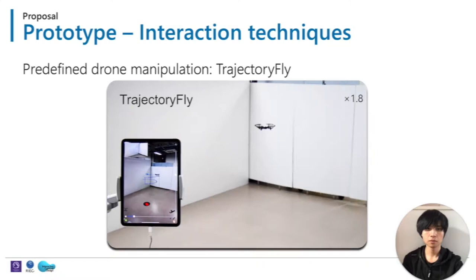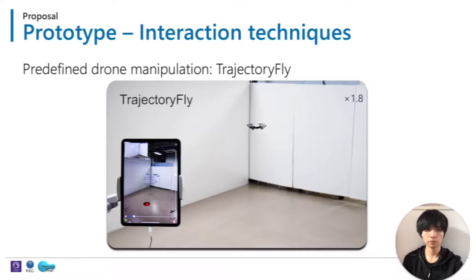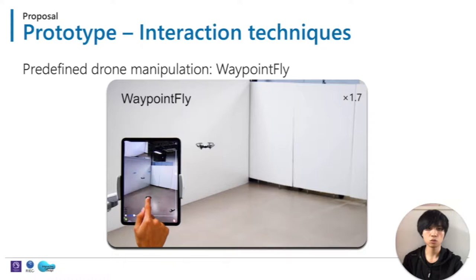Third, trajectory fly: first draw a flying trajectory, and the drone will fly along that path. Last, waypoint fly: first designate some waypoints, and the drone will fly along those waypoints. During the flying process, the user can also move the direction slide bar manually.